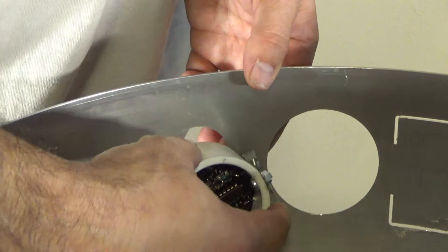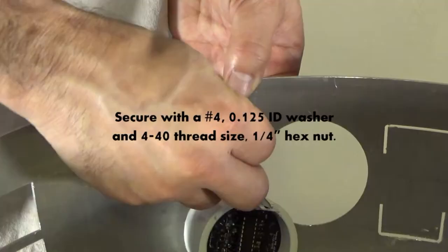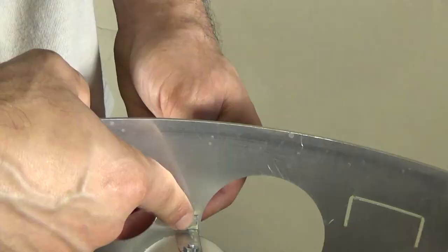How to put the captive stud in. You thread it through, grab your hardware, put the hardware over that. Pull the captive stud out just a little bit.